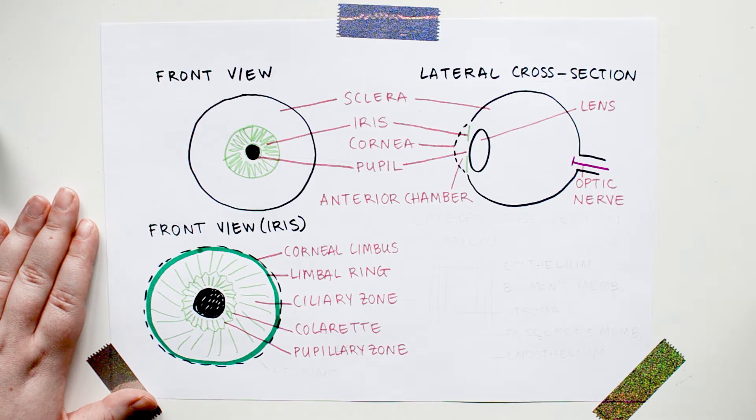Just like with the limbal ring, the colorette is normal, pretty much everyone has it, and if you didn't, you would already know by now. I'm telling you all this because oftentimes people who are not familiar with human eye anatomy see the limbal ring and they think it's a KF ring, or they look at the colorette and they think it's a sunflower cataract.